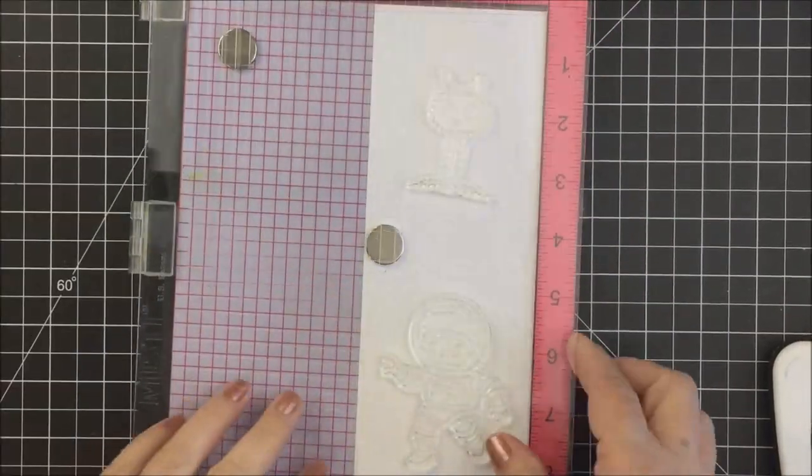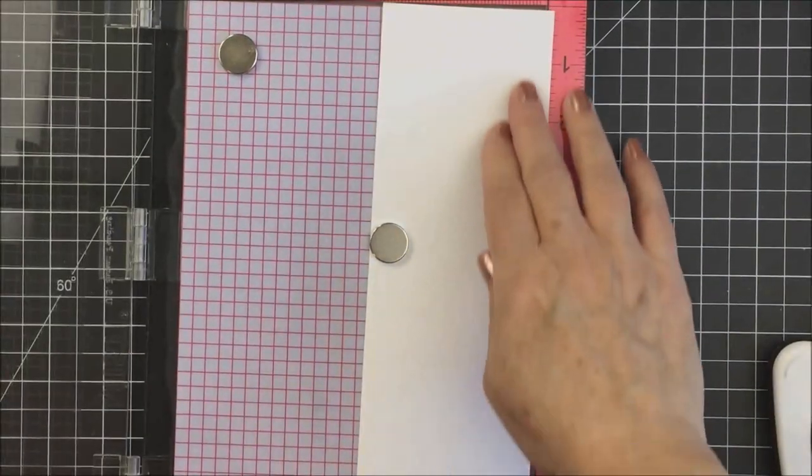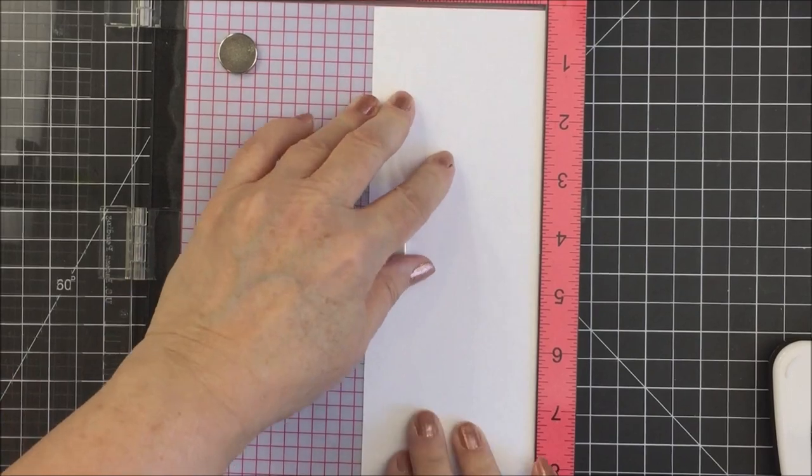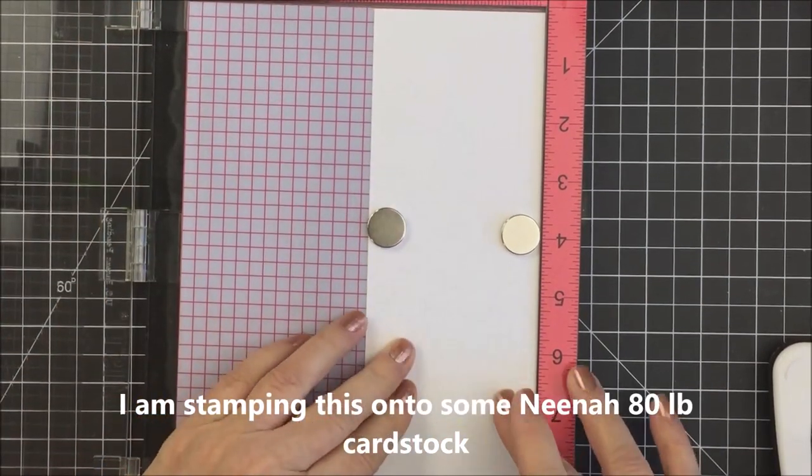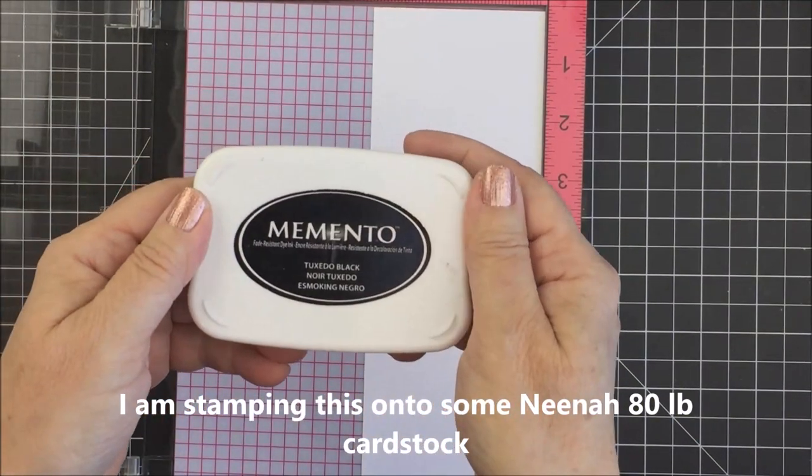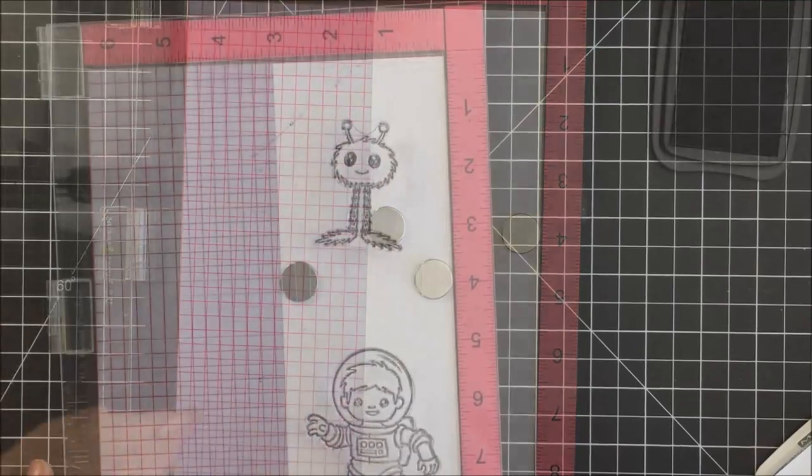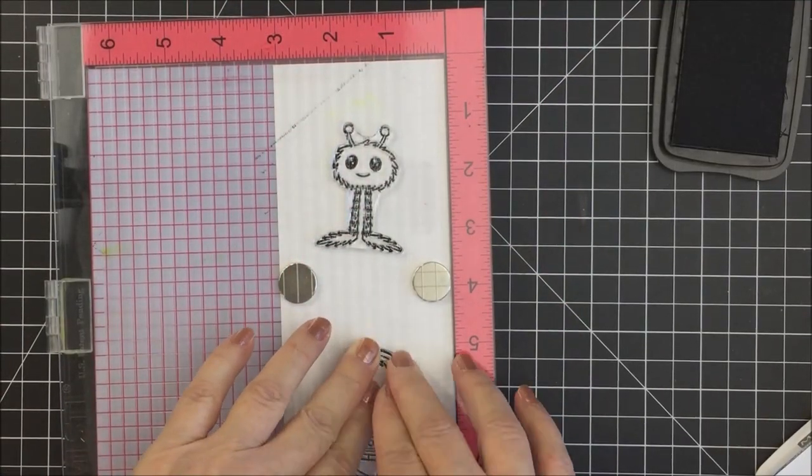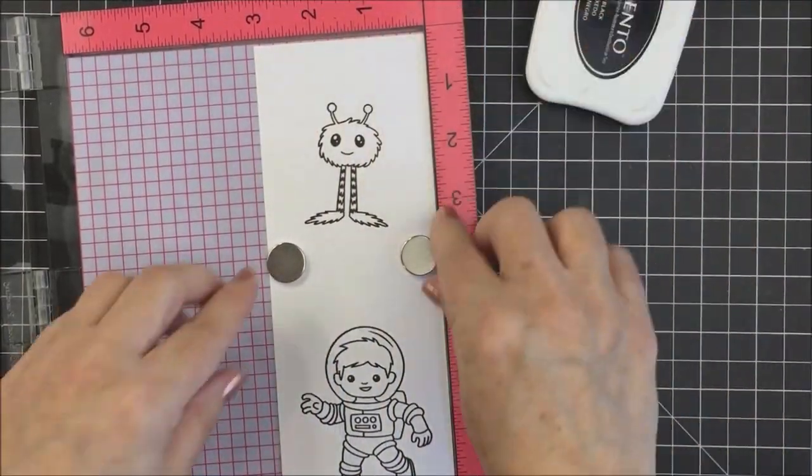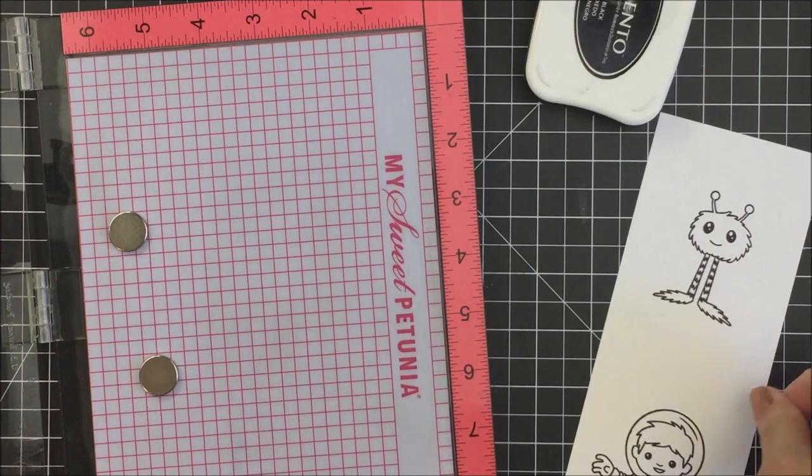Now I'm going to take my MISTI stamping tool to stamp out the images for my card. I'm going to stamp out the little boy astronaut and one of the little space creatures, and I'm going to do some Copic coloring. I want to use my Memento Tuxedo Black ink, which is a Copic friendly ink, to stamp out my images here. I stamp them out a few times to make sure that they are nice and solid, and when I'm all finished with that, I'm ready to go ahead and do some really simple Copic coloring.